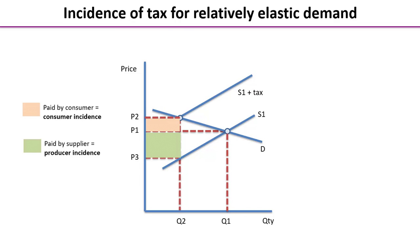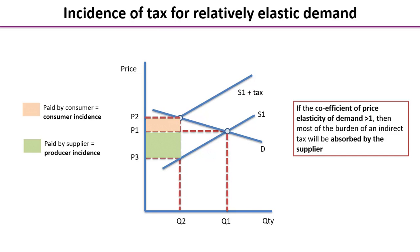That's how we do it with relatively elastic demand — it's worth jotting down a few notes on your downloadable worksheet. There's also a useful summary box: in this case the coefficient of price elasticity of demand is greater than one, in other words PED is price elastic, meaning quantity demanded is very responsive to a change in price. In this case most of the burden of that indirect tax is absorbed by the supplier — in other words the producer incidence is a much greater proportion than the consumer incidence.